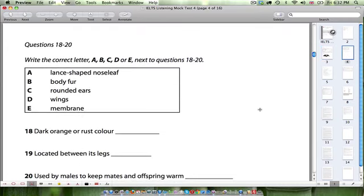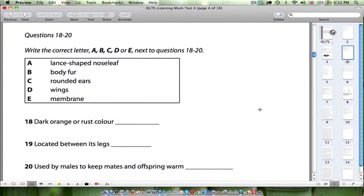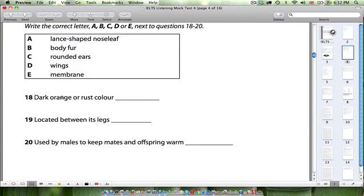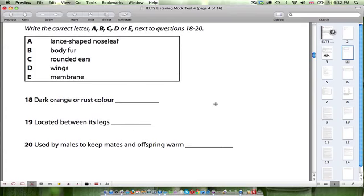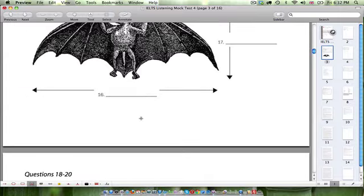Previewing 16 to 20. We already talked about those. Let's look at these ones. Write the correct letter, A, B, C, D, E. Next question. Dark orange or rust in color. Now, these look like different parts of the bat. Body fur, rounded ears, wings, membrane located between its legs, used by males to keep mates and offspring warm. Offspring means its babies. Mates means the animal that it has produced the babies with. So it looks like we're going to have to match these body parts with these descriptions.